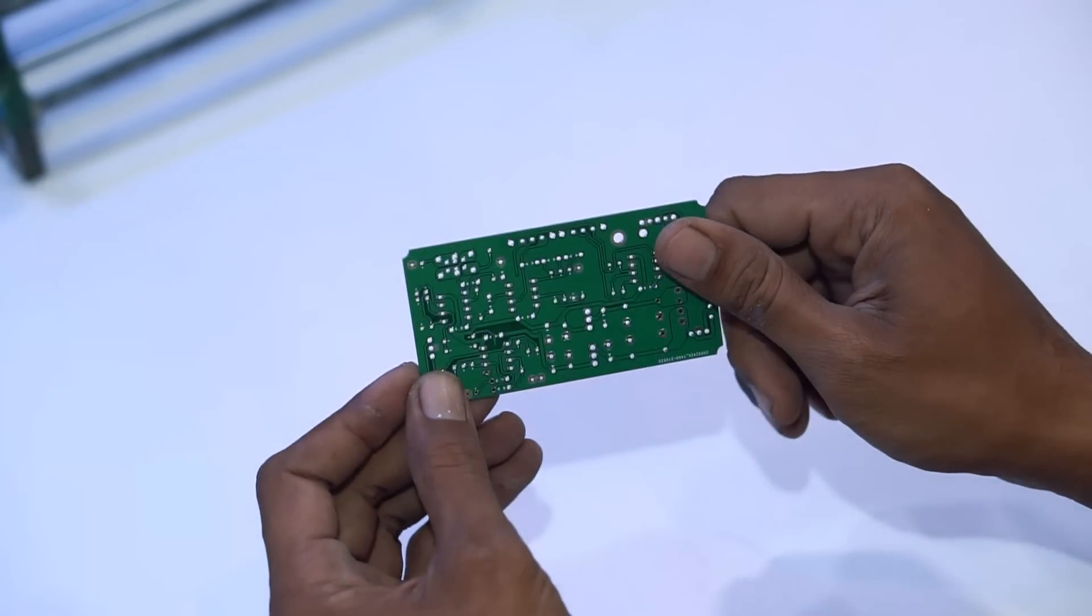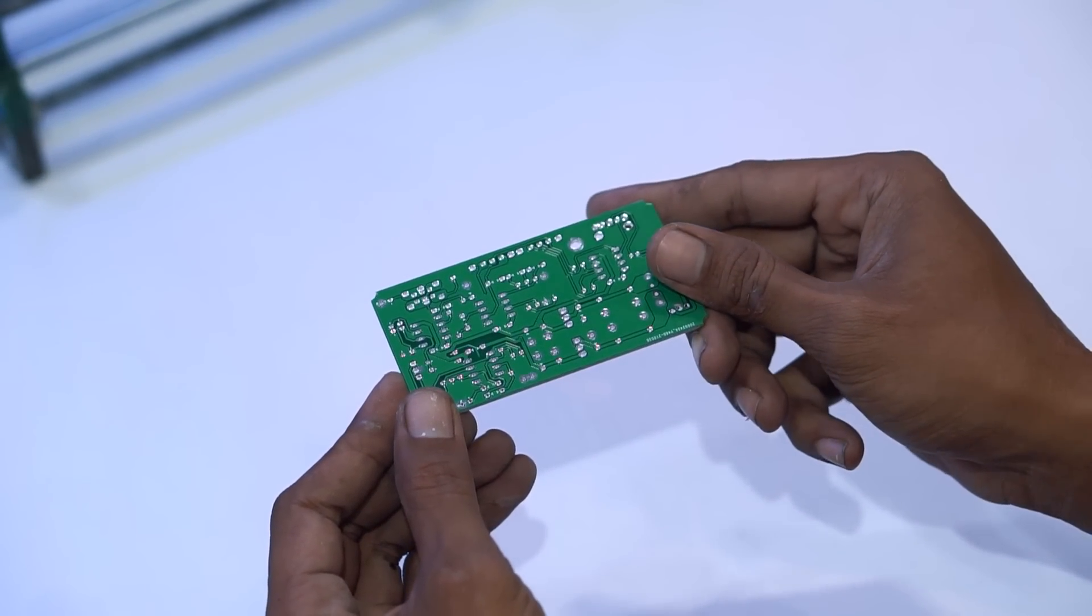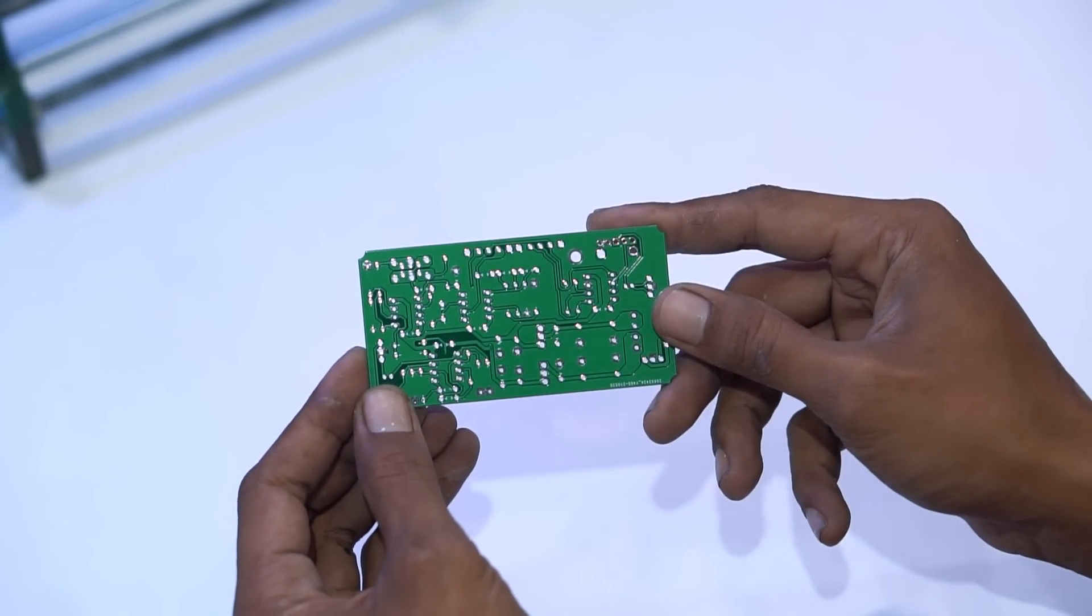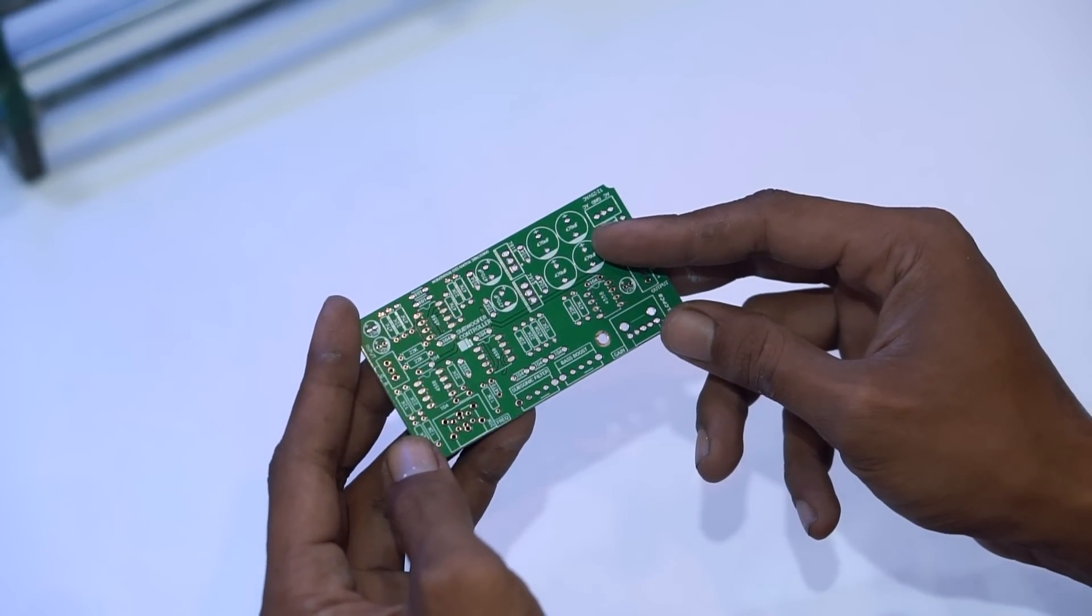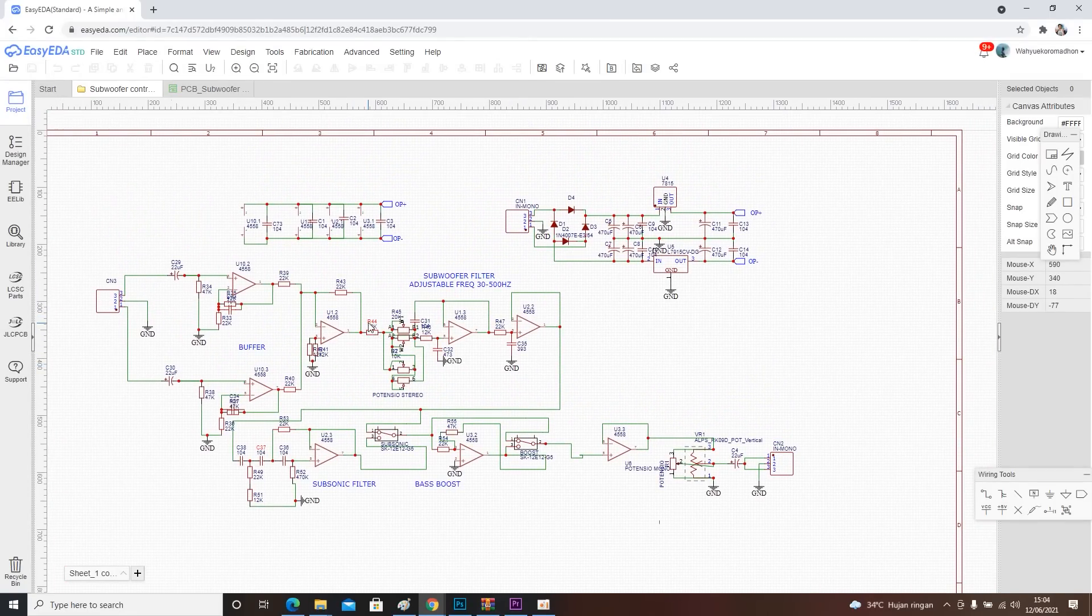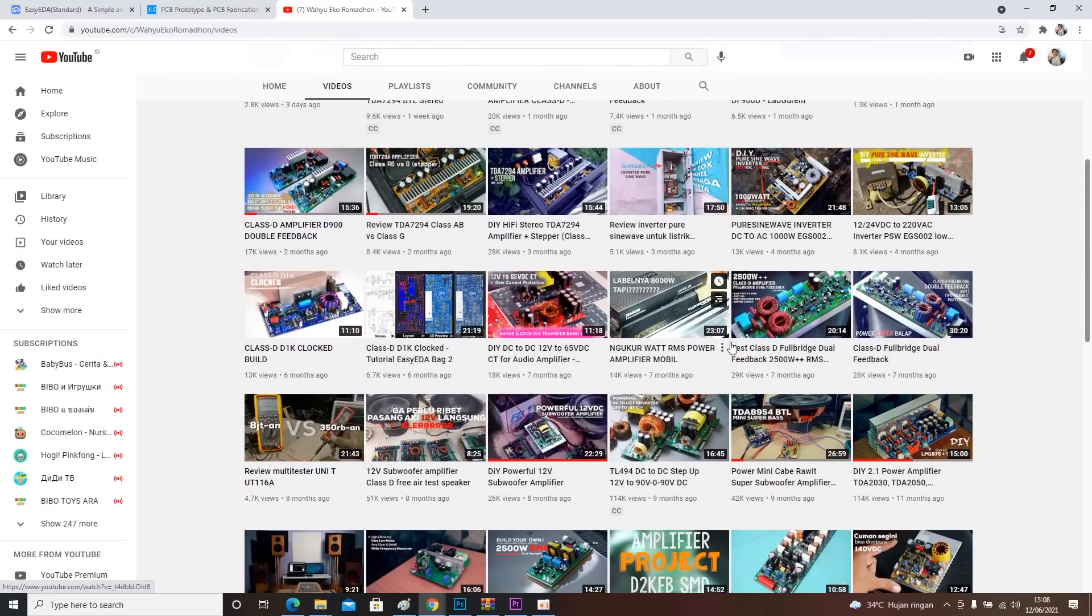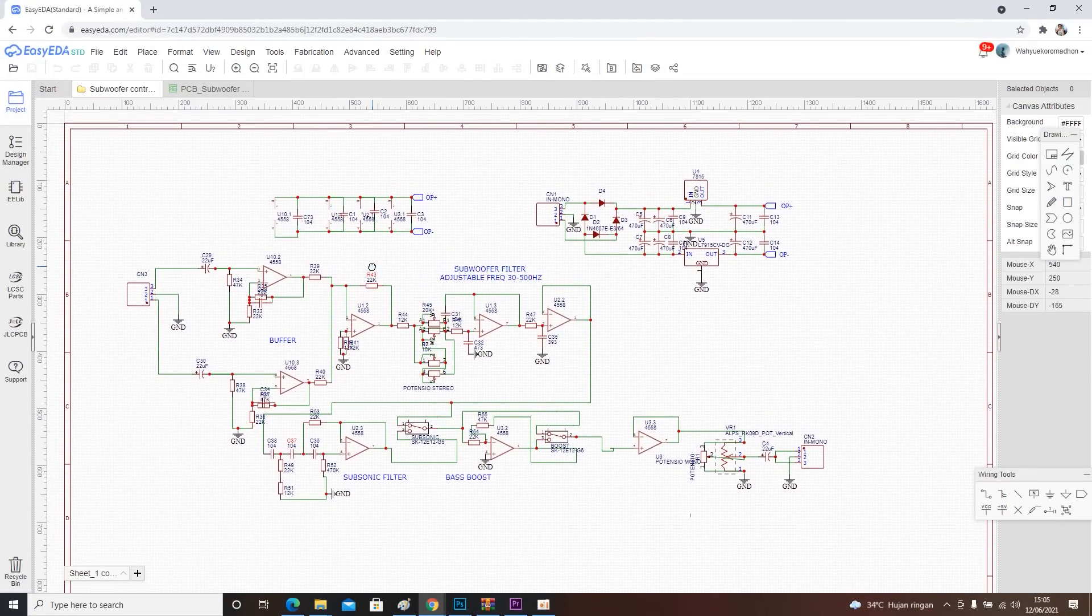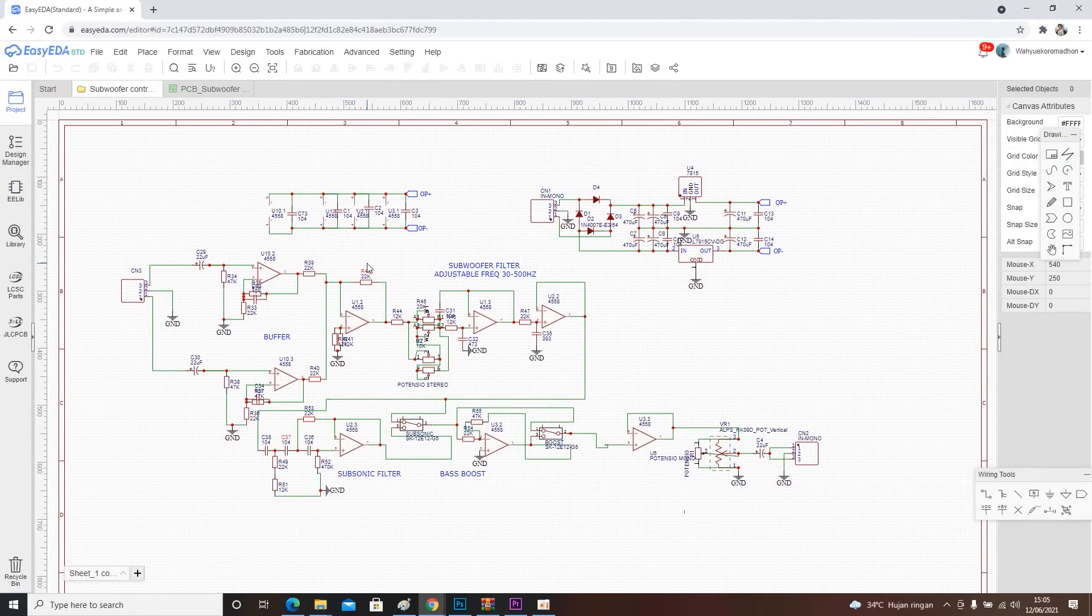Here is the PCB, the size is quite compact with dimensions of 9x4.8 cm. I drew this circuit in my favorite application, isieda.com. I have previously applied this subwoofer controller in the video 12V Powerful Subwoofer Amplifier. The results were very satisfying, so I made a separate subwoofer controller so you can try adding this kit to your subwoofer amplifier.